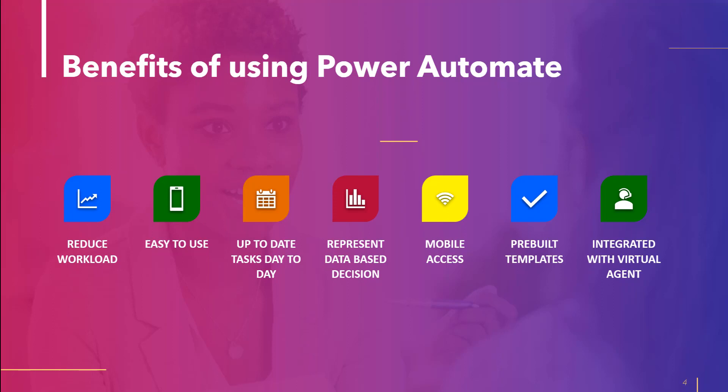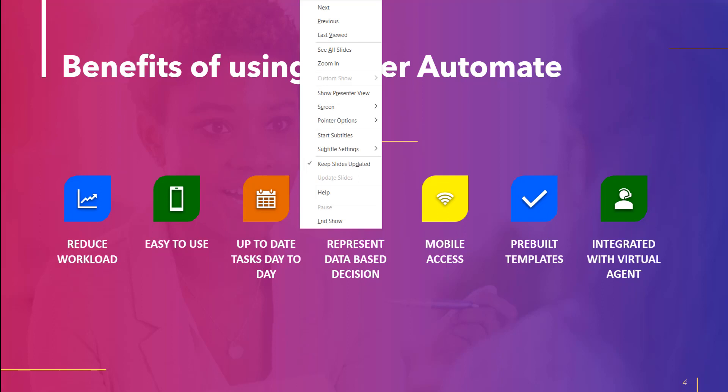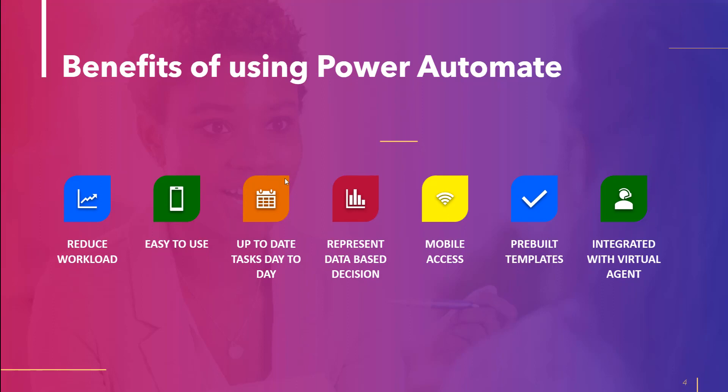Reduced workload helps to reduce workloads as well as human errors and saves time too. Easy to use: as it is a low-code or no-code platform, an end user can easily use and set up Power Automate by using pre-built templates and connectors. Up-to-date day-to-day tasks: it allows assigning business events so that users can get notifications when high-priority emails arrive, and as a result they never miss an email.